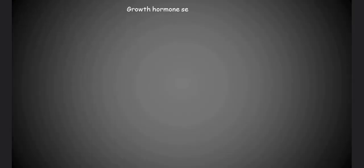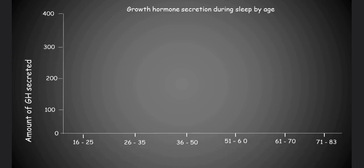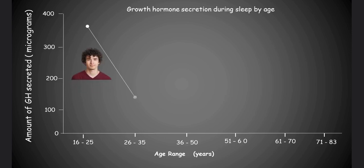During the fourth decade of life between ages 30 to 40 years, the total amount of GH secreted over a 24-hour span decreases by 2 to 3-fold. Similarly, the amount of slow-wave sleep decreases dramatically over the same narrow age range.